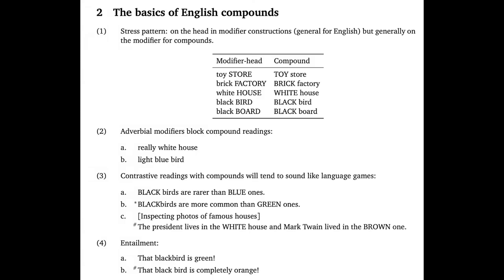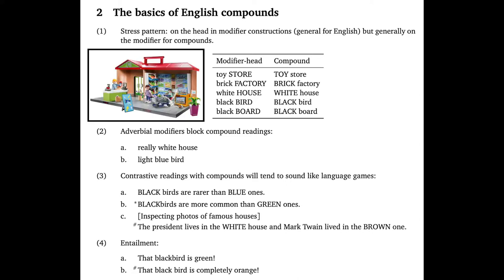Let's move now to section two: the basics of English compounds. This will help us get a feel for the nature of the phenomena we'll be studying. The first distinction relates to the default stress pattern for noun compounds as compared to regular attributive adjective constructions. This table of examples is adapted from our Partee 1995 reading. Partee observes, for example, that a 'toy store' with focus on 'store' is probably a child's toy — something that depicts a store perhaps. That's the modifier-head construction.